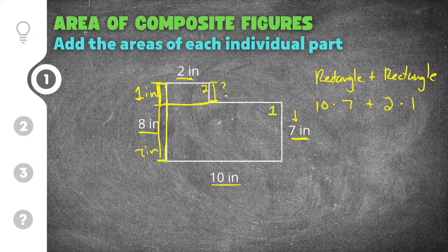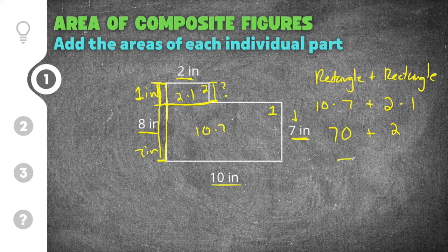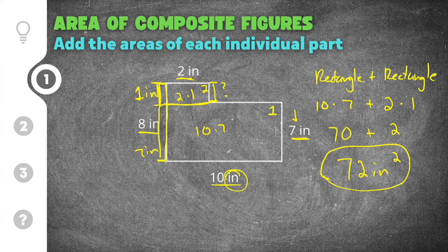The area of rectangle one is ten times seven, which is seventy. We add that to the area of rectangle two, which is two times one, giving us two. Seventy plus two equals seventy-two. Our units are inches, and because we're talking about area, it's inches squared. So the area of this composite figure is seventy-two inches squared.